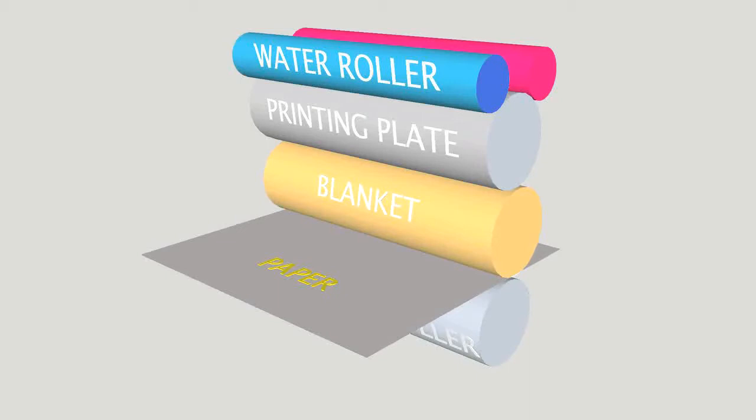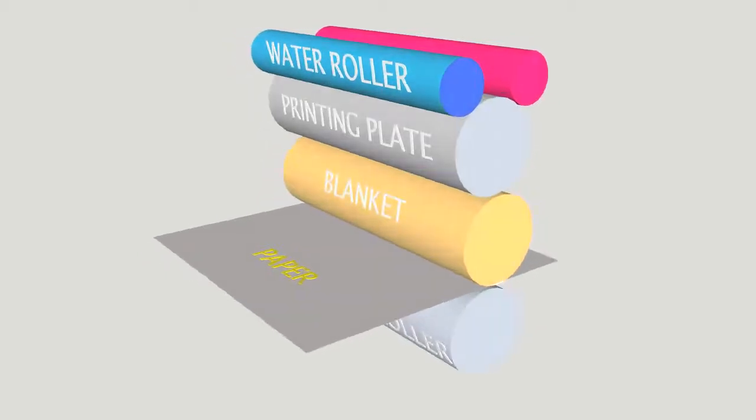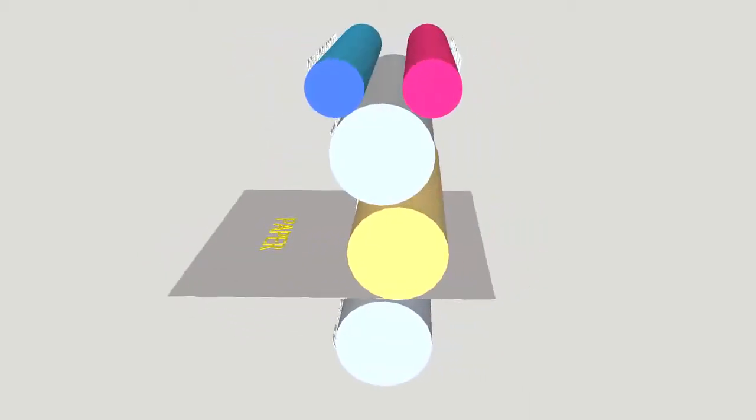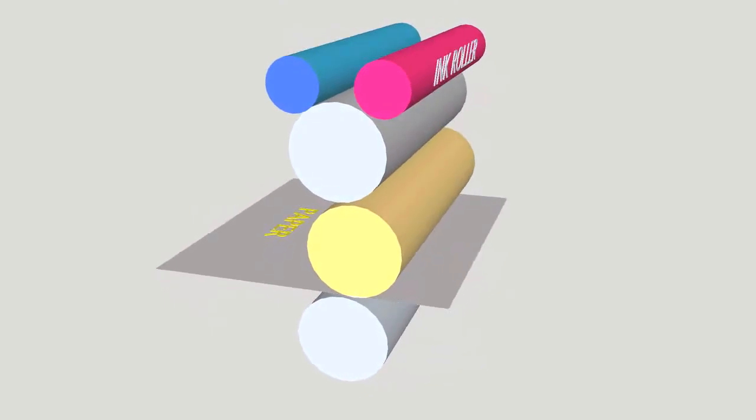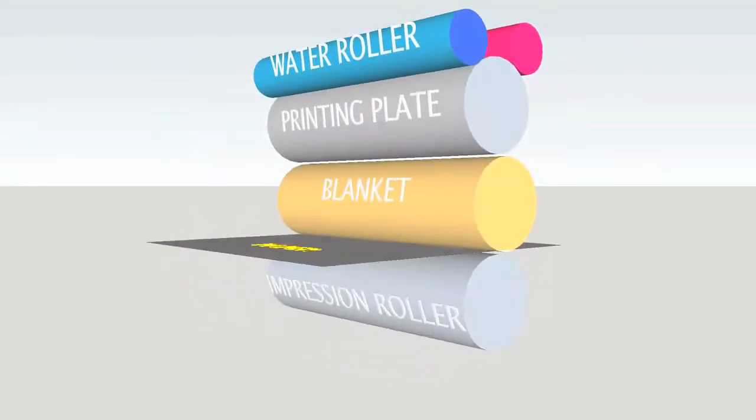This inked image is now transferred to the rubber blanket cylinder. This in turn rolls and transfers it to the paper which is held in place by the impression roller.